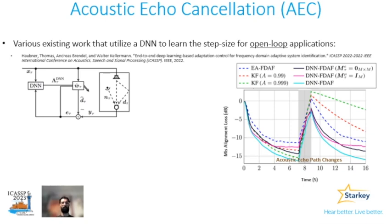Various works utilize a DNN to learn the step size for open-loop applications, such as acoustic echo cancellation, as proposed in a paper from ICASSP 2022. In the figure, you see the conventional methods with dashed lines, while the proposed DNN method is represented by a solid line. As you can see, the performance of the adaptive filter is enhanced in several factors.